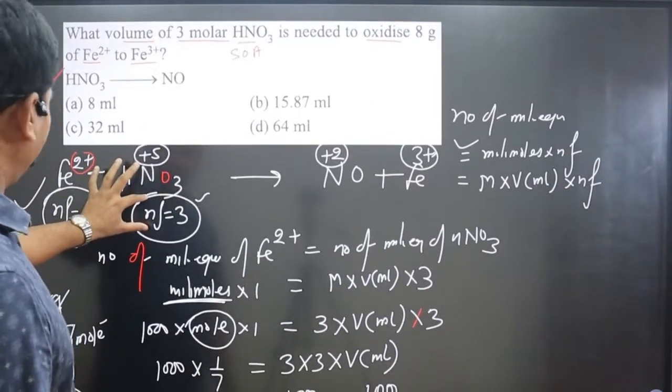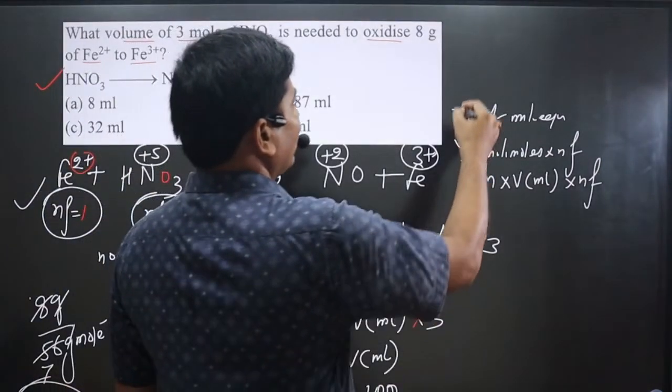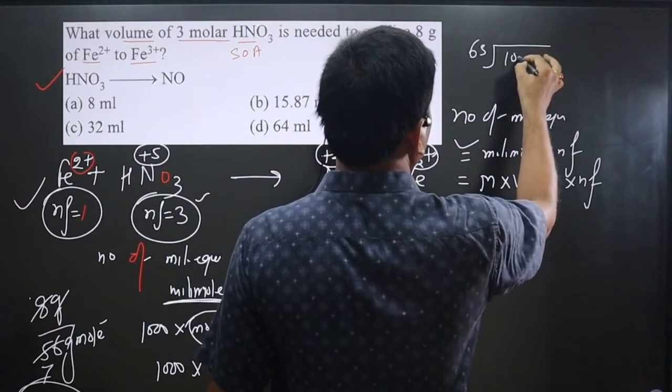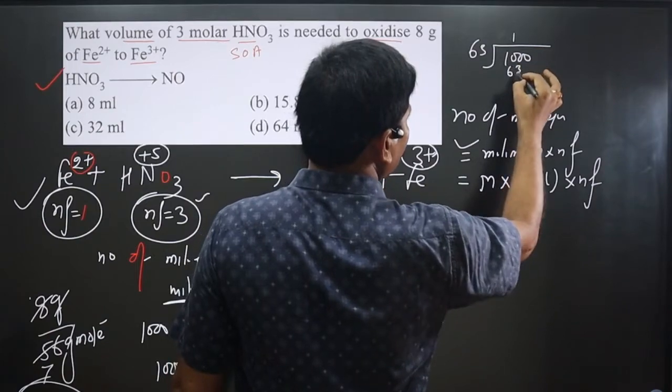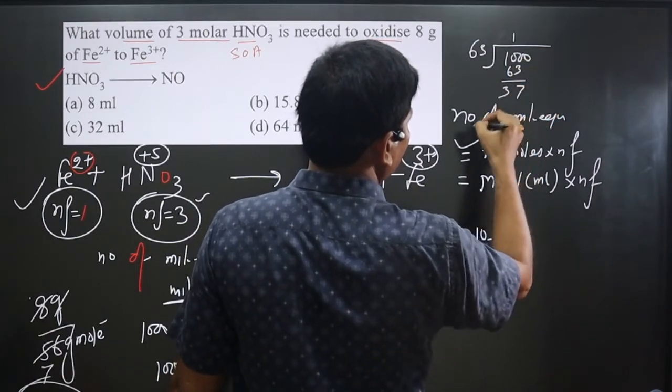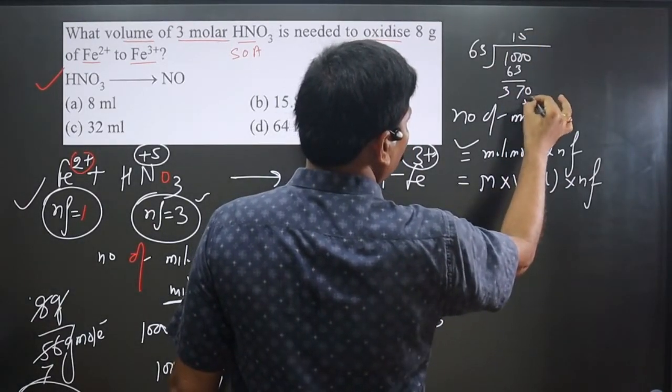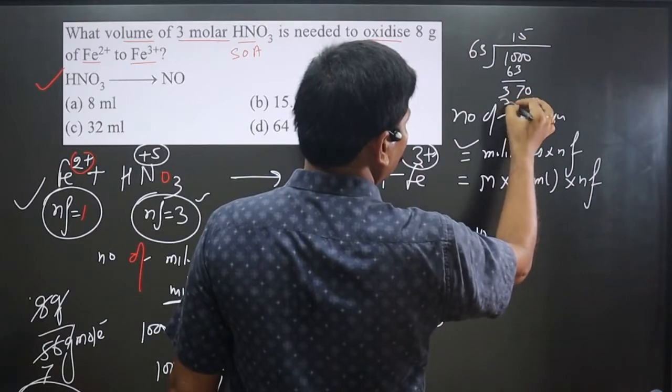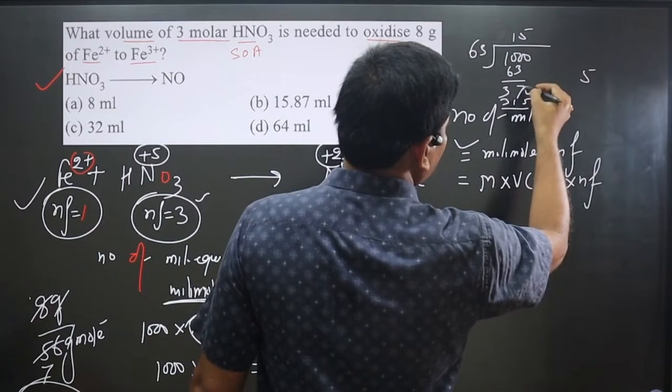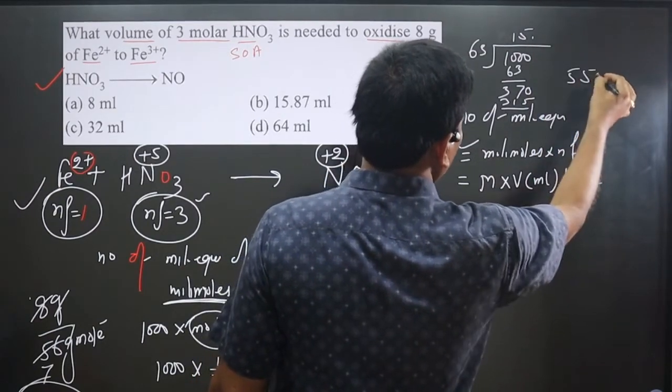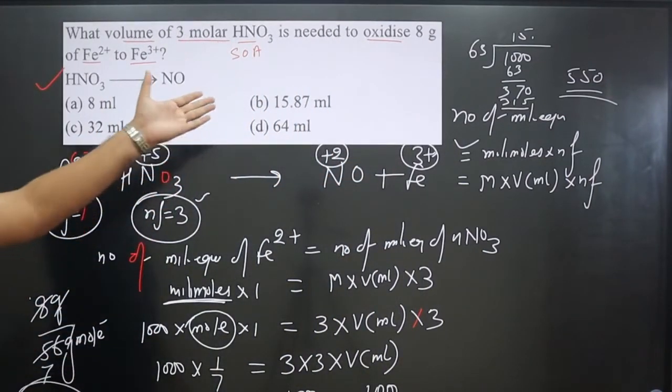Now we can simplify. 1000 divided by 63. 63 into 1000 gives us: one time 63 is 63, subtract to get 37, bring down 0, 370. 5 times 63 is 315, subtract to get 30. Then 1 remains. This gives us 15 point something. 15 point something, any option? You can see B option is given there. So we can select B option. 15 point something coming means if you simplify further, you will get 15.87.